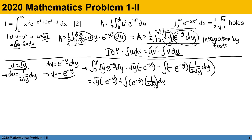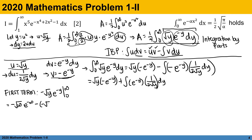We have two terms. For the first term, we have negative square root of y times e to the negative y evaluated from 0 to infinity. Substituting: negative square root of infinity times e to the negative infinity, minus negative square root of 0 times e to the negative 0. The second sub-expression cancels, and the first also cancels due to the exponential of negative infinity. Therefore, the first term equals zero.